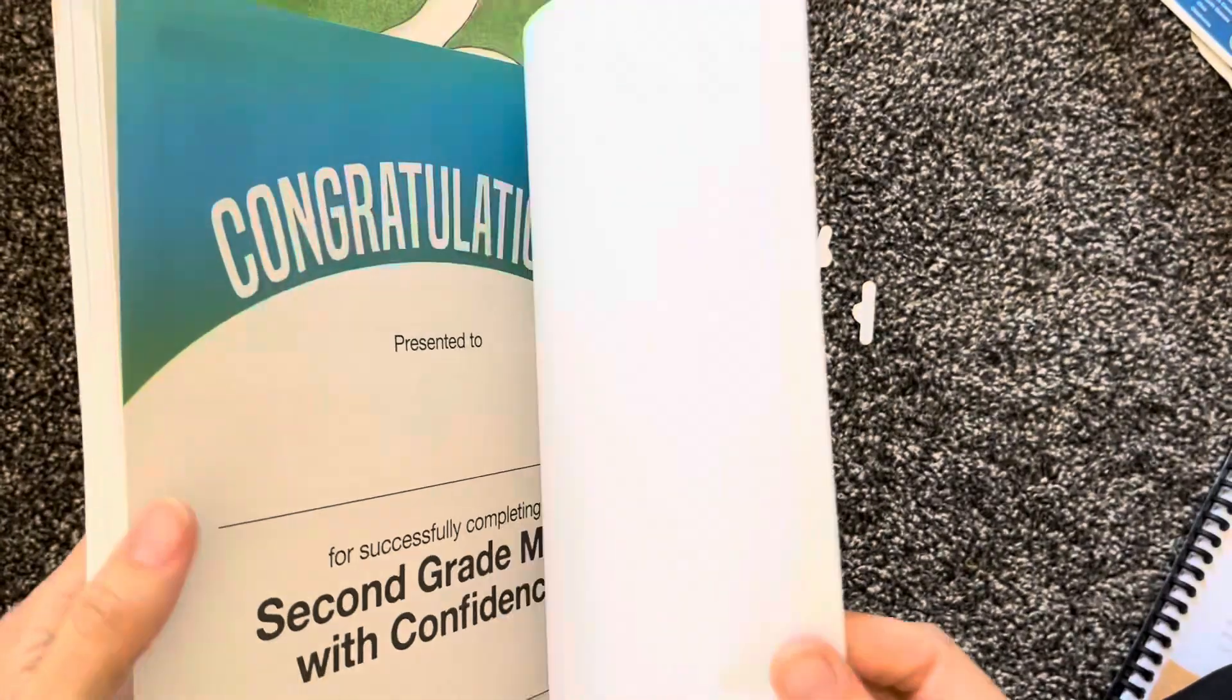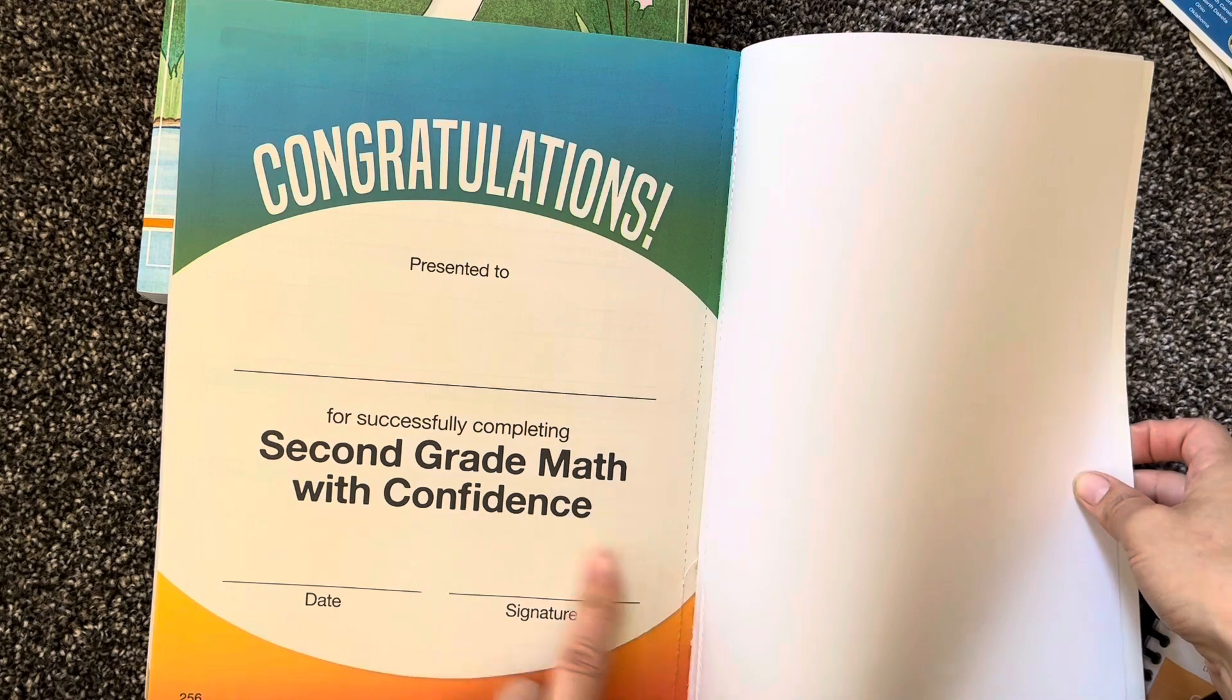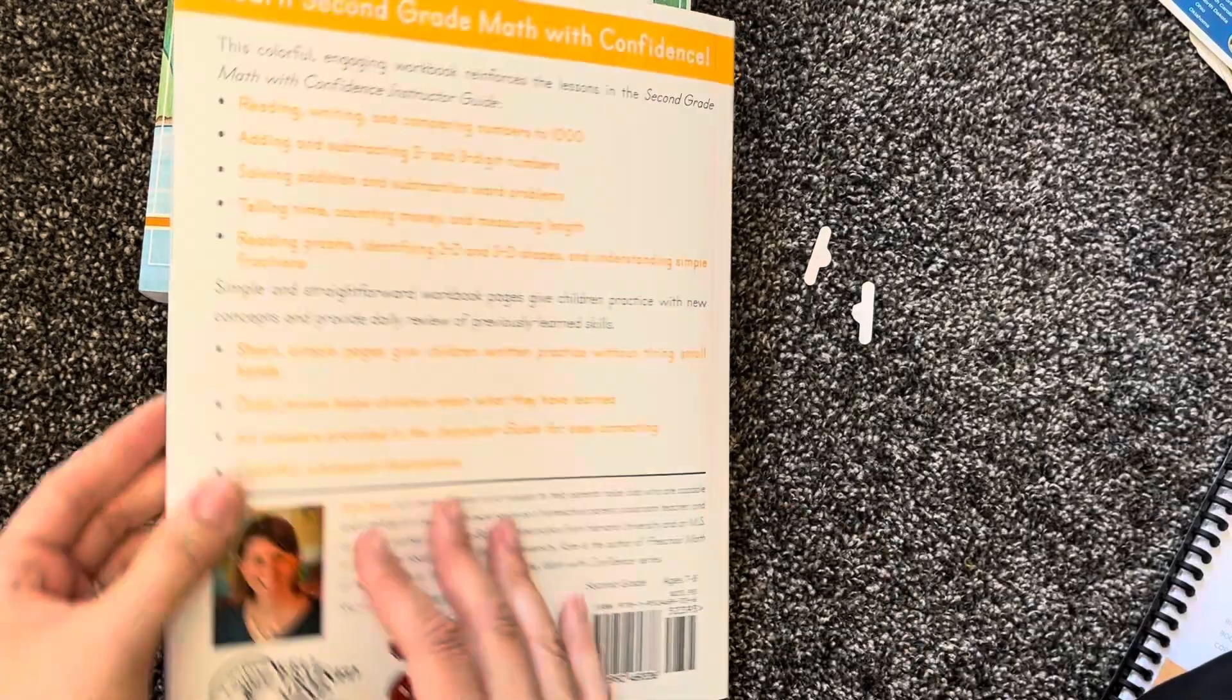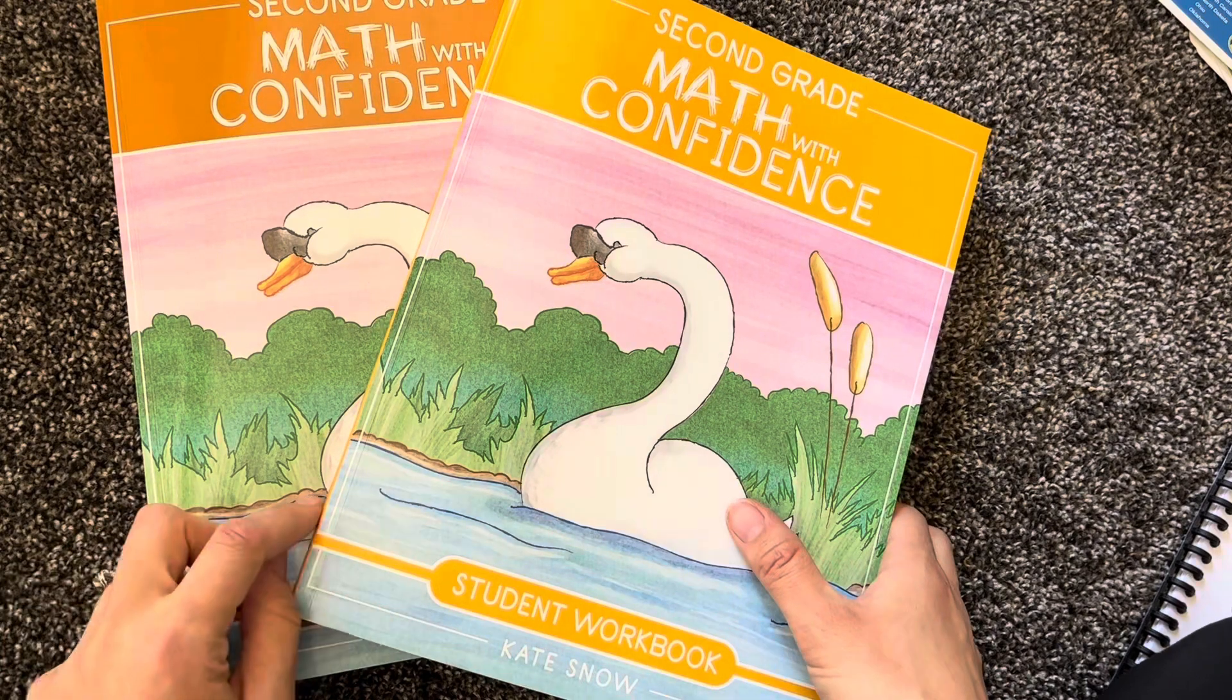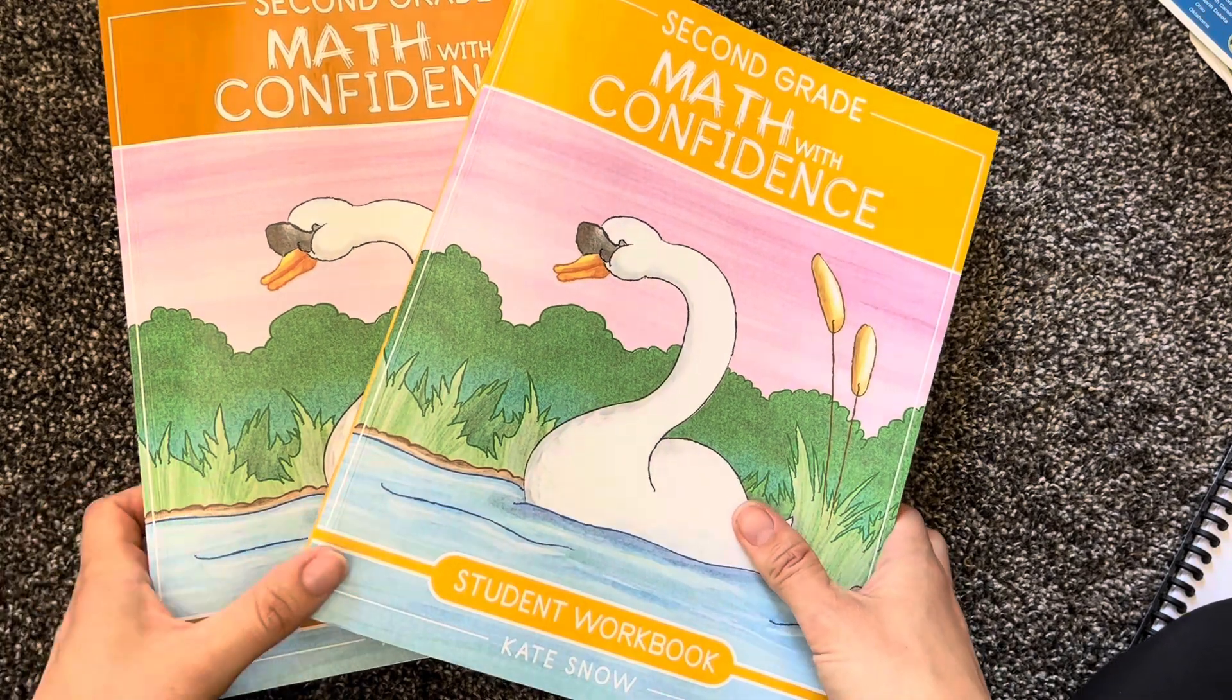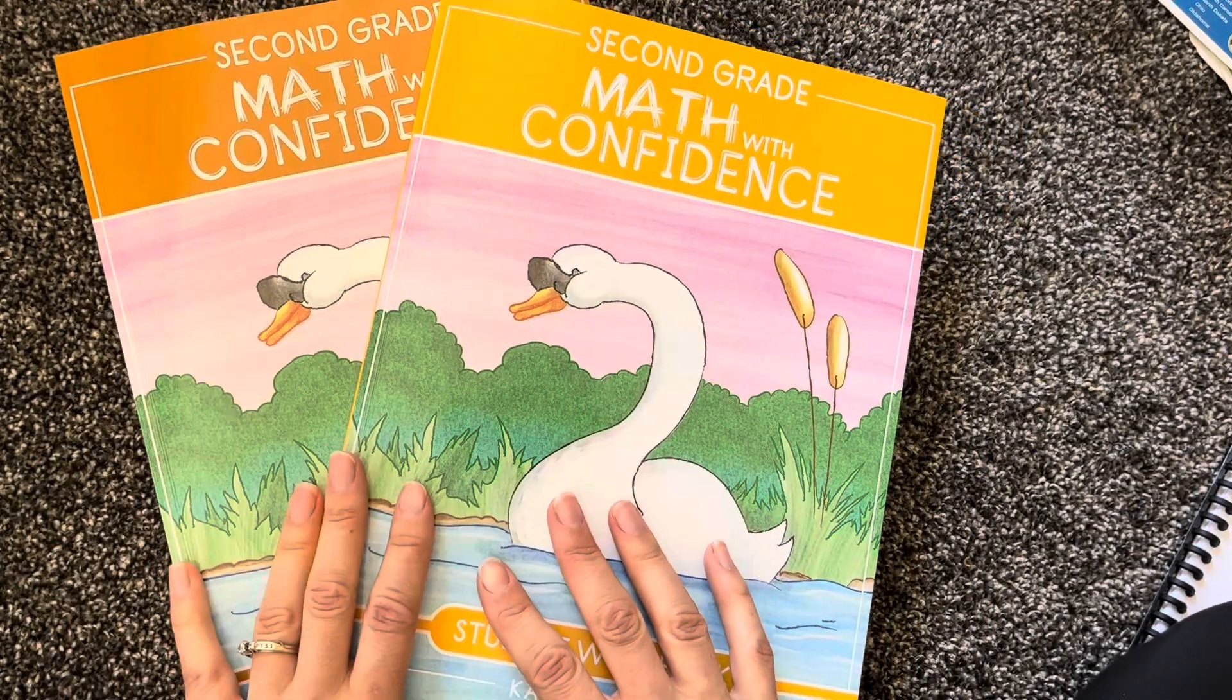That's the instructor's guide. I think at the back of this there's going to be a congratulations second grade Math with Confidence certificate. So you can maybe do something special at the end and present this. Overall, super great curriculum. I am enjoying it so far. Please leave me any questions in the comments. And I will go ahead and link this in the description for you if you would like to go check it out. Be sure to give this video a like and subscribe for more homeschool videos. And we will see you next time.